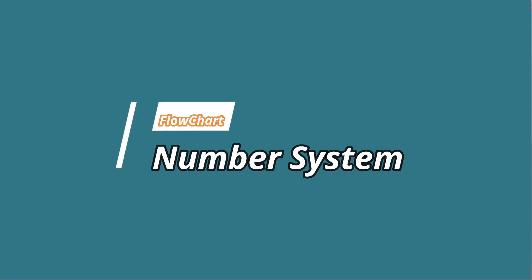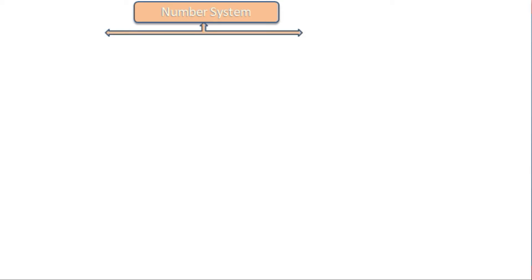Let us discuss the flowchart of the number system. A number system flowchart consists of different categories into which the number system has grouped its numbers.